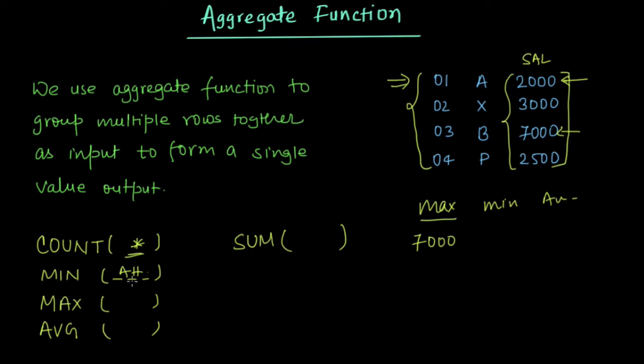And let's say, if I want to count the unique values of some particular column. For example, if I have here, one more record, let's say 05 and Z and it's 2000.